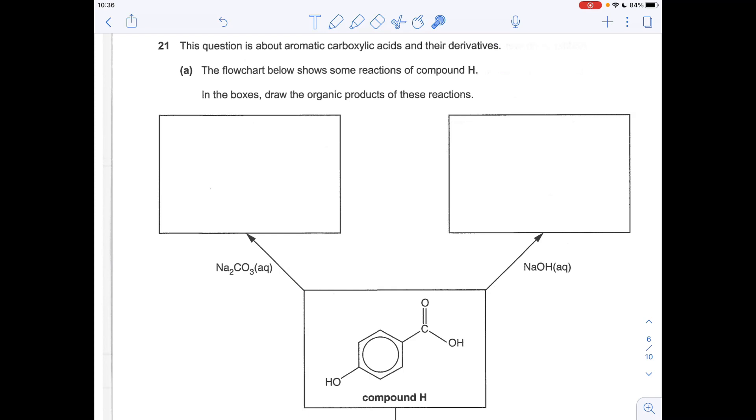So these two reactions are testing your knowledge of acidity reactions. So sodium carbonate is only a weak base. It can only react with the carboxylic acid group. So that's going to generate that compound there. Whereas sodium hydroxide is a much stronger base. It can react with both the phenol OH group and the carboxylic acid OH group as well.